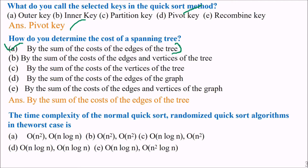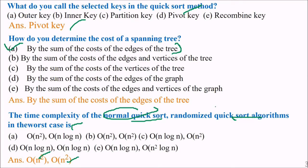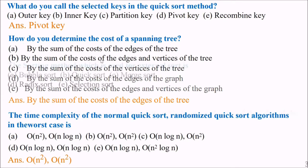The time complexity of normal quicksort and randomized quicksort algorithms in the worst case is order of n squared. Normal quicksort has a best case of n log n, but for normal or randomized quicksort the worst case is order of n squared.